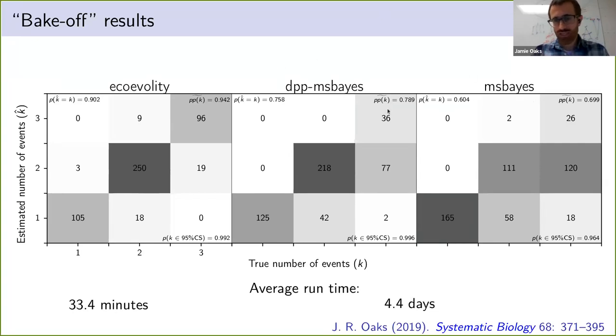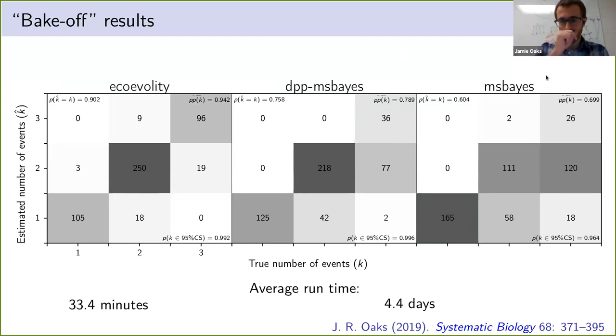Looking at average runtime across all simulations, it's about 30 minutes for our new approach versus over four days for the approximate approaches. The ABC methods are basically avoiding calculating the likelihood by doing tons of simulations, and that's why they can take so long.